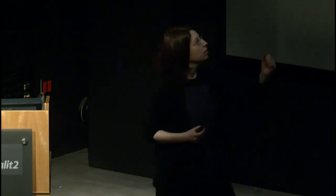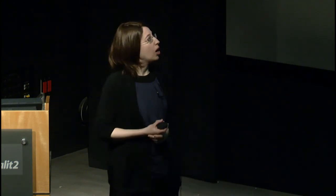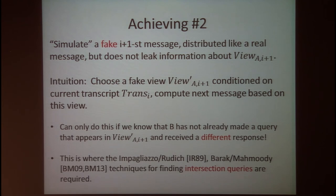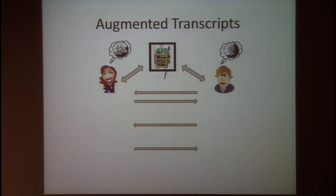The problem is that the simulated message's distribution may not be correct: it won't look right to Bob if Bob has already made a query that appears in the fake view but received a different response from the real oracle. This resembles the problem of finding intersection queries between Alice and Bob, and the results of Impagliazzo-Rudich and Barack-Mahmoudi help us prevent this situation.